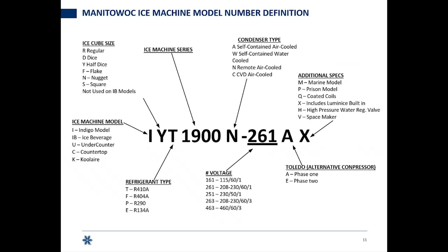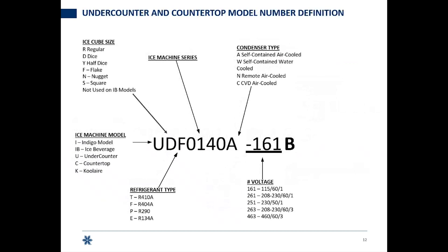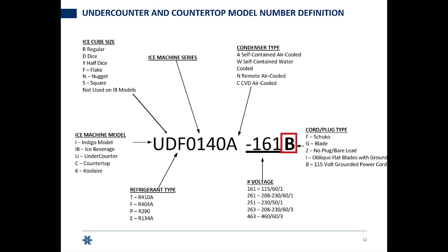And there's the whole model number definition again on the screen, letting you see what we're calling out. We do want to highlight the undercounter series just a little bit. Everything up through the electrical code is going to be the same, but there's going to be a letter at the end of the electrical code — and it's not for an alternative compressor. Our undercounter series have a cord that comes with them, and it designates the cord/plug type. This one has a B as in Bravo, letting you know it's a 115-volt grounded power cord. Our modular units do not come with cords installed from the factory — that will have to be installed upon initial install by a qualified technician.